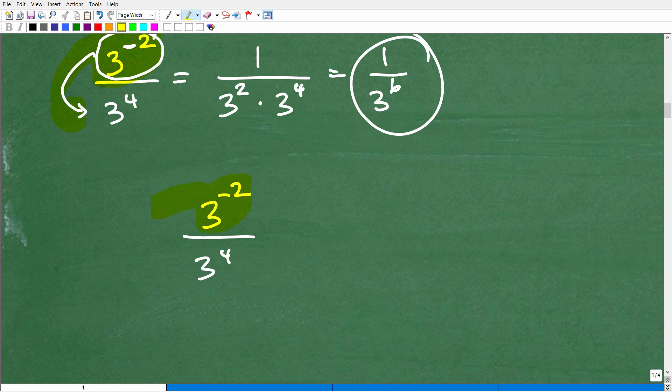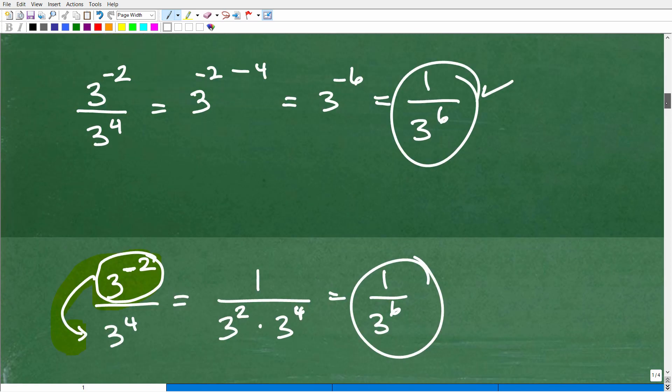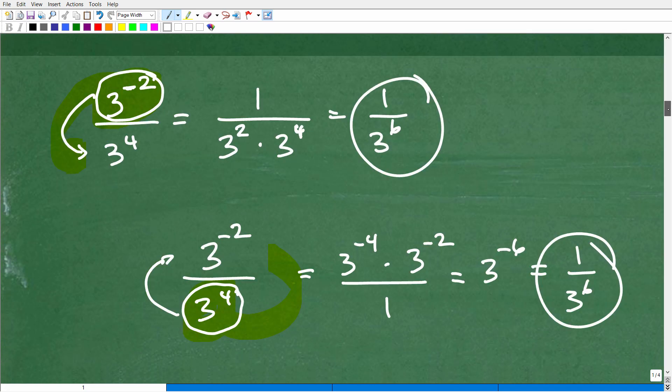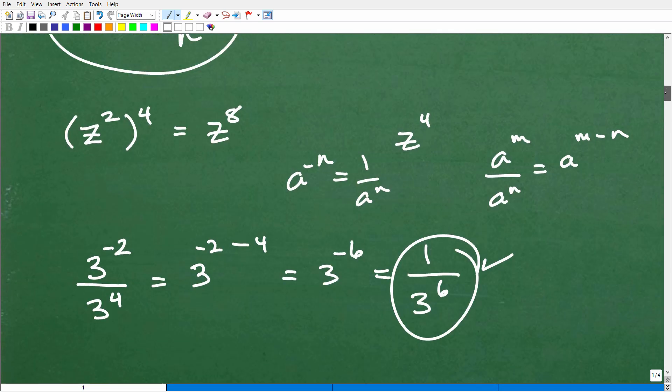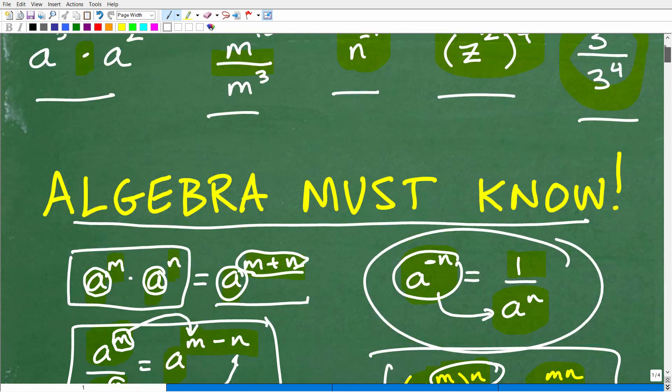Now you can see here 3 squared times 3 to the fourth, same base. So I could just add the exponents. So 2 and 4 is 6. That's 1 over 3 to the sixth power, just as we have right here. But let's just make this point a little bit clearer. So 3 to the negative 2 over 3 to the fourth. Now what I decided to do was to move this power down in the denominator. But I could have also moved this power up in the numerator. It's not the way I would approach this problem, but let's just make sure you understand this. So here it's 3 to the positive fourth. If I move this up to the numerator, that's going to go from a positive 4 to a negative 4. So whatever that sign is, it just becomes the opposite sign. So I could write this as 3 to the negative fourth times 3 to the negative 2 all over 1. And of course, I can now add these exponents, same base. This is multiplication, so that's 3 to the negative 6. And of course, that is 1 over 3 to the sixth power. So lots of different ways you can come to the right answer when you're dealing with properties and exponents.